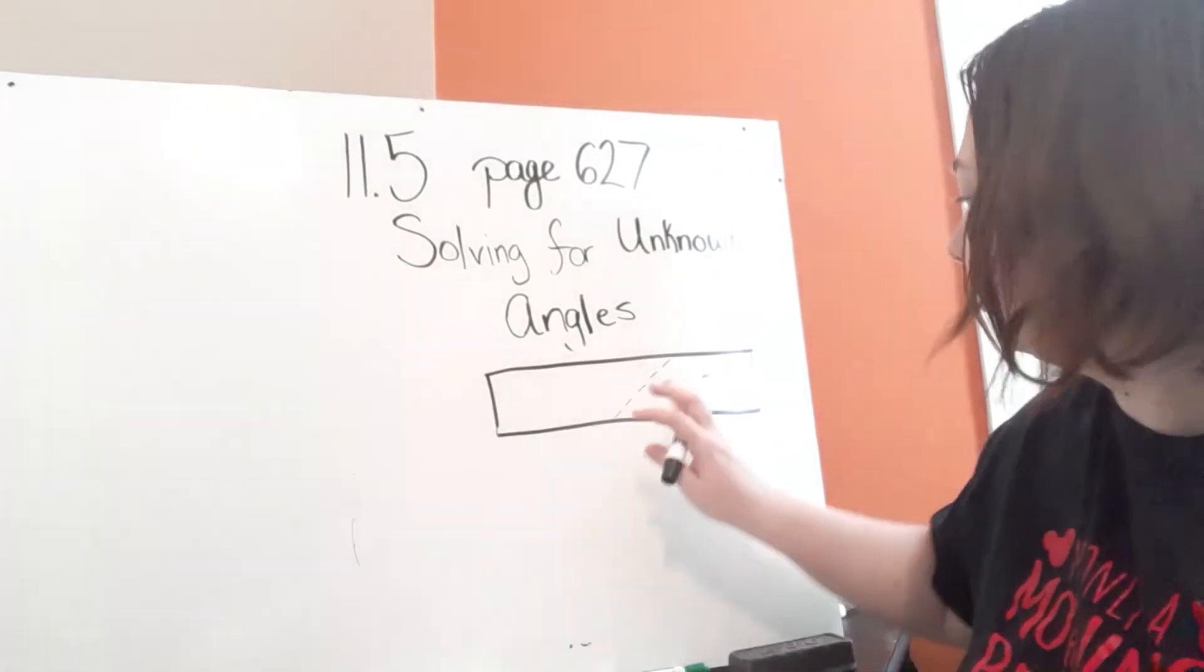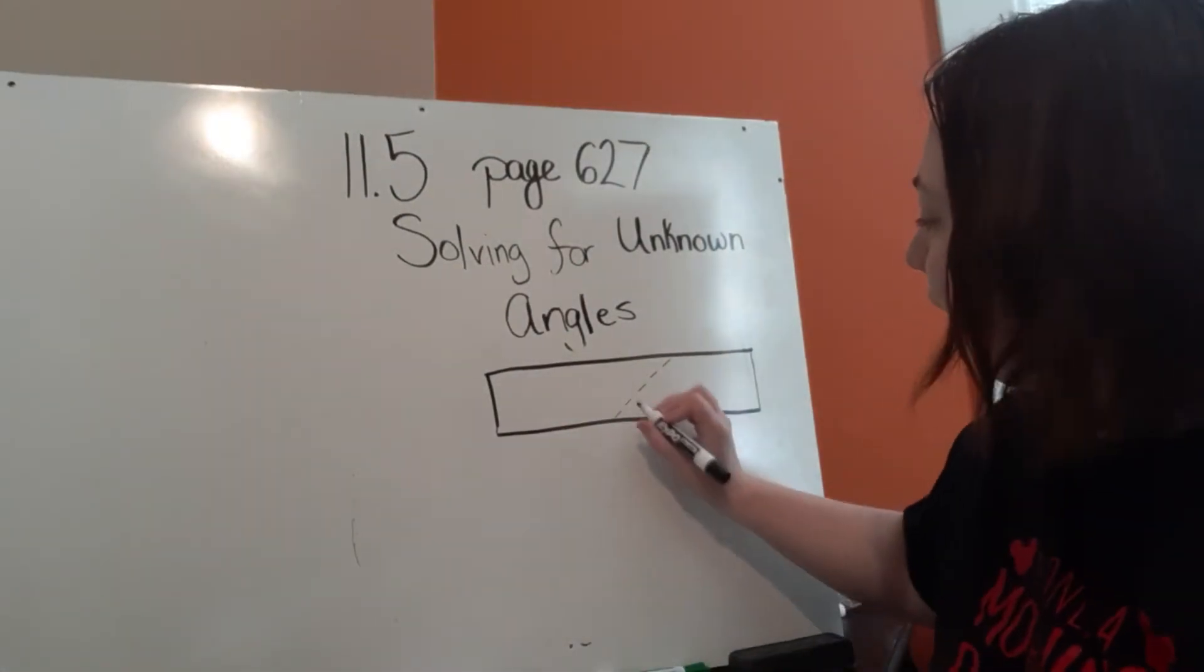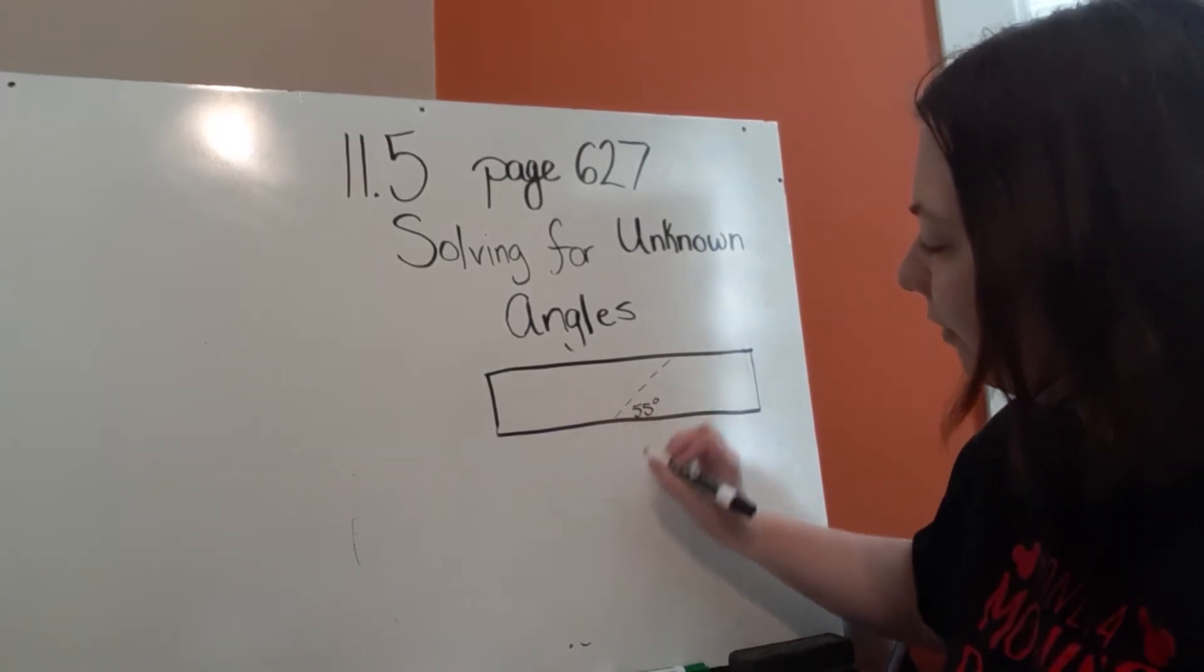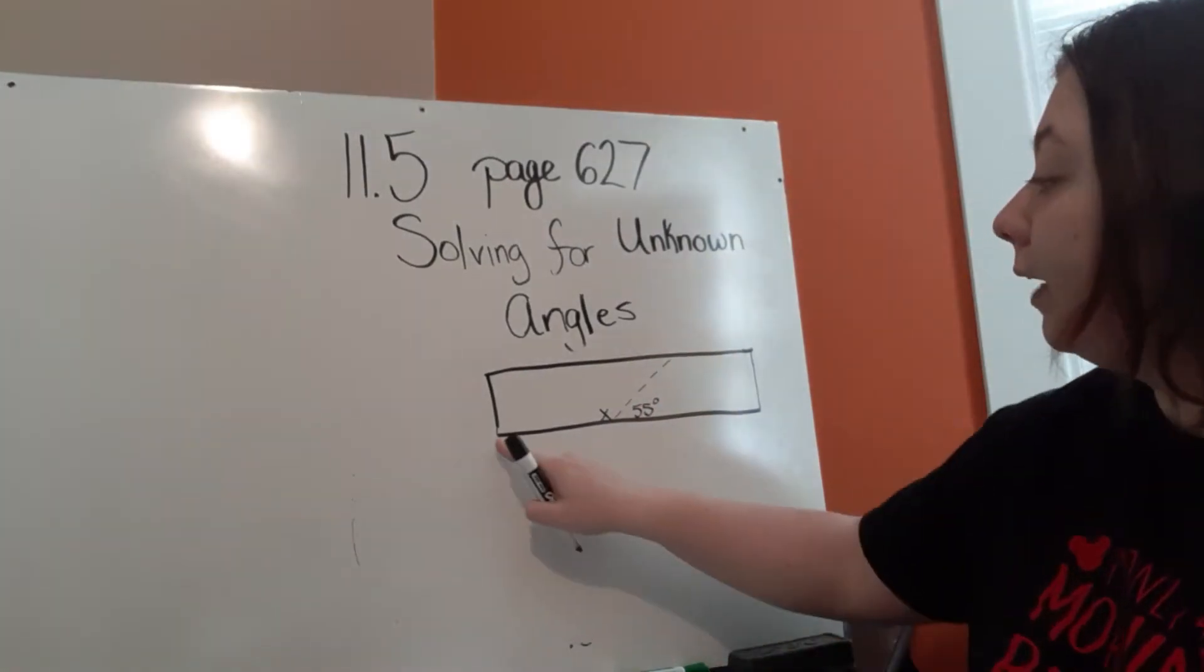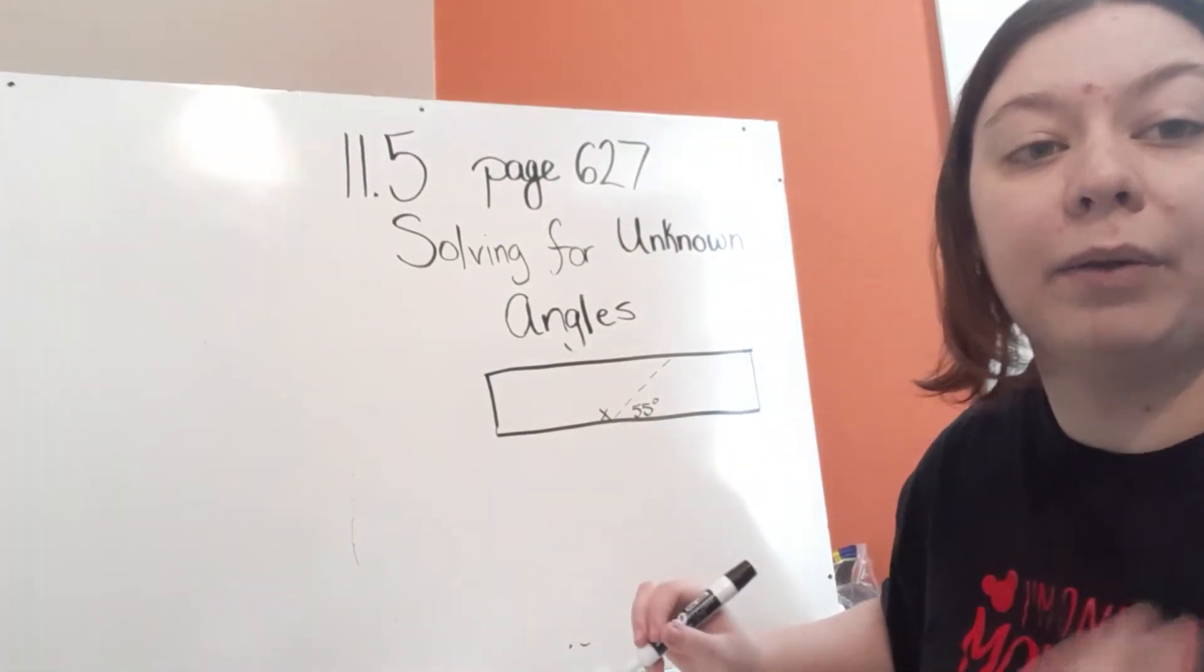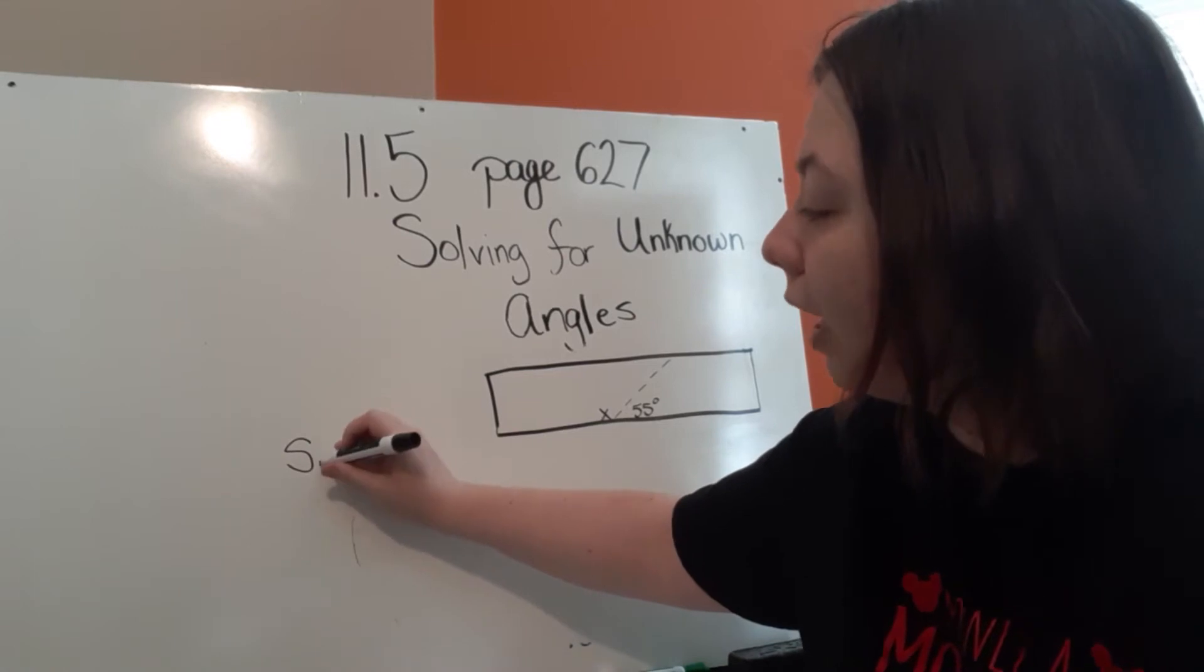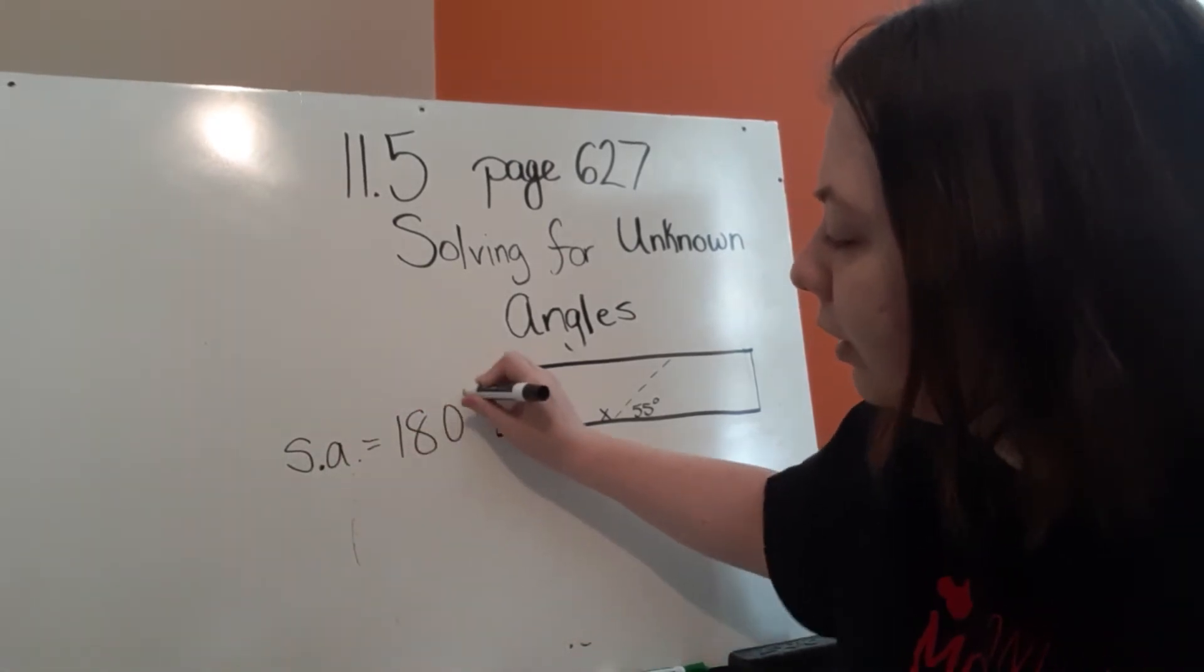But again, this is just my interpretation. Now they're telling you that one of the angles is 55 degrees and our unknown again is X. So we need to think of this, this is a straight angle. And we know that a straight angle, I'm going to put SA, equals 180 degrees.